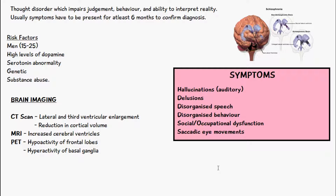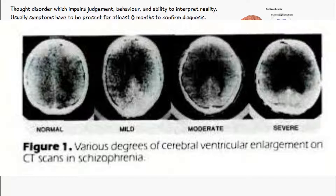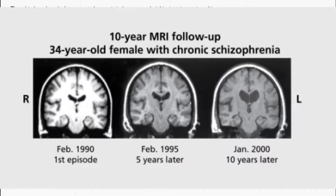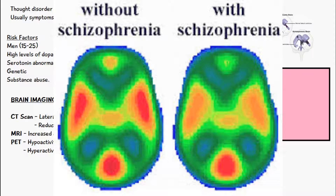Saccadic eye movements are also seen, which is where they have jerking eye movements. If you look at the brain imaging of a person who has schizophrenia, a CT scan will show lateral and third ventricular enlargements and reduction in cortical volume — I'll show you a diagram of that here. An MRI scan will show increased cerebral ventricles, that will be this region here. And a PET — positron emission tomography — will show hypoactivity of the frontal lobes and hyperactivity of the basal ganglia.